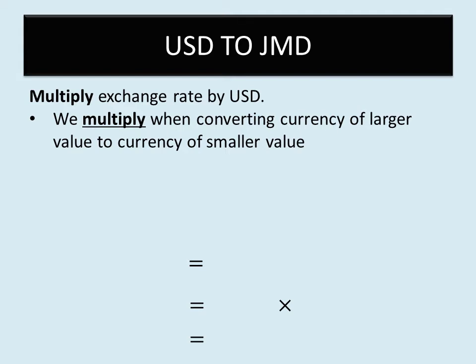When we convert from U.S. dollars to Jamaican dollars, we multiply because we're converting from a larger currency to a smaller one. For example, one U.S. dollar is equal to 145 Jamaican dollars — that's what we call the exchange rate. It means if I have a U.S. dollar in my hand, it will be worth 145 Jamaican dollars.